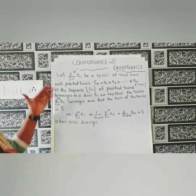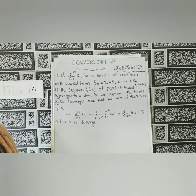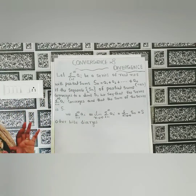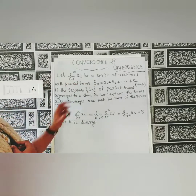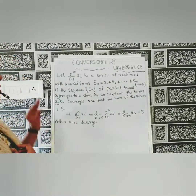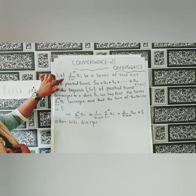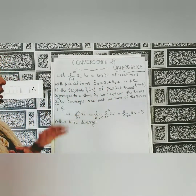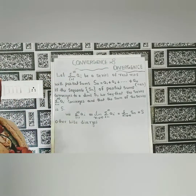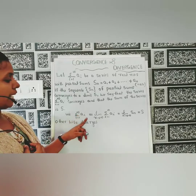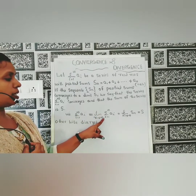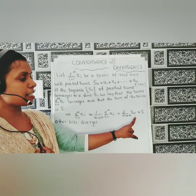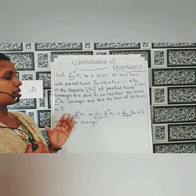Convergence and Divergence. Definition: Let sigma i from 1 to infinity of a_i be a series of real numbers, and let s_n = a_1 + a_2 + ... + a_n be the partial sum. If the sequence s_n of partial sums converges to a limit s, then we say the series converges to s: sigma i from 1 to infinity a_i = limit n to infinity s_n = s. Otherwise the series diverges.